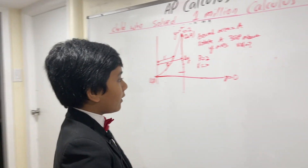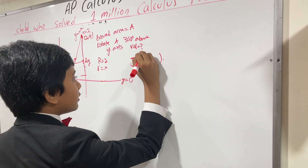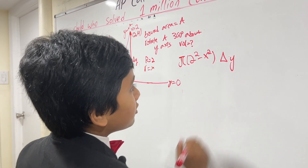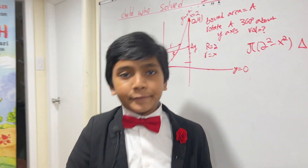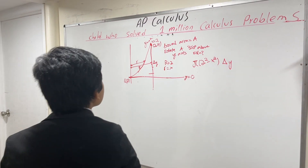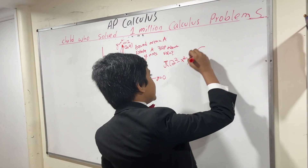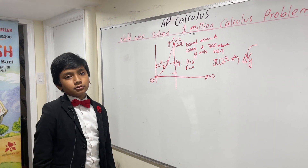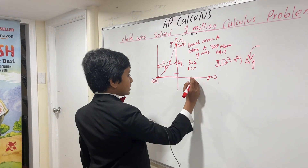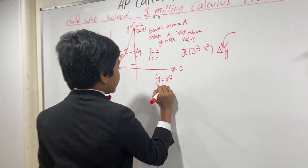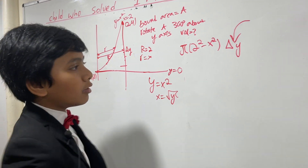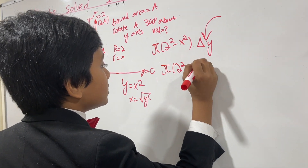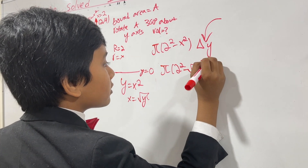So we have Pi times (2 squared minus X squared) Delta Y. Now we just have to add up all of those. But X doesn't look very orderly, especially when we're going to take the integral with respect to Y. So instead, let's solve for X in the equation y equals x squared — this gives us x equals root Y. Putting that in, we have Pi times (2 squared minus root Y squared) Delta Y.